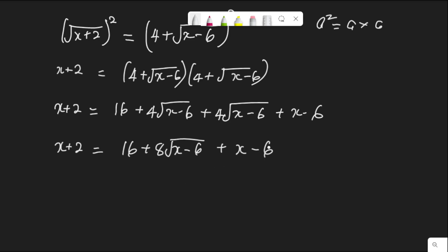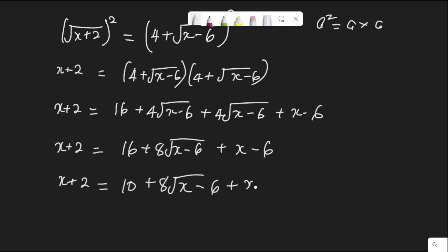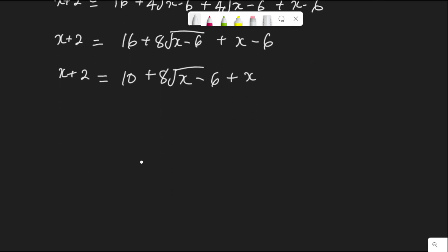Let me collect like terms. I have x plus 2 equal to 16 plus 8 root x minus 6, plus x. We can bring the constant terms together: 16 minus 6 is 10. So I have x plus 2 equal to 10 plus 8 root x minus 6 plus x.